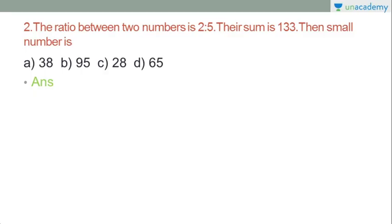Another question: the ratio between two numbers is 2 is to 5, and their sum is 133. What is the smaller number?